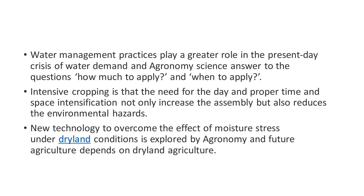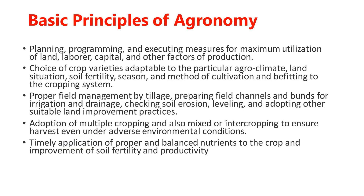New technology to overcome the effect of moisture stress under dry land conditions is powered by agronomy, and future agriculture demands dry land agriculture. The basic principles of agronomy include: planning, programming, and executing measures for maximum utilization of land, labor, capital, and other factors of production; and the choice of crop varieties adaptable to the particular agro-climate, land situation, soil fertility, season of cultivation, and fitting to the cropping system.